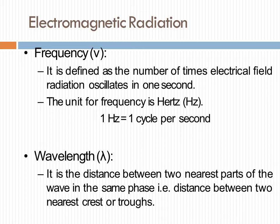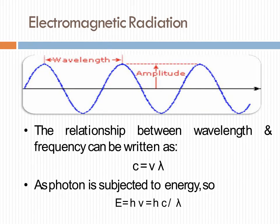This graph shows the relationship between wavelength and frequency, which can be written as C is equal to nu lambda. As a photon is subjected to energy, E is equal to h nu and nu is equal to C upon lambda, so we can say E is equal to h nu and nu is equal to c upon lambda.